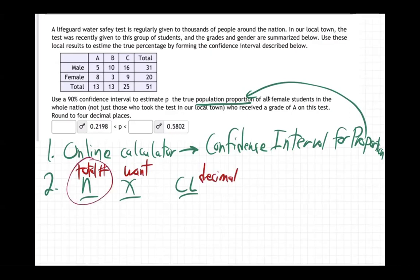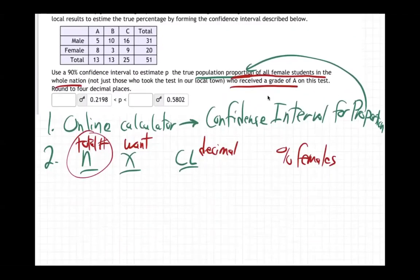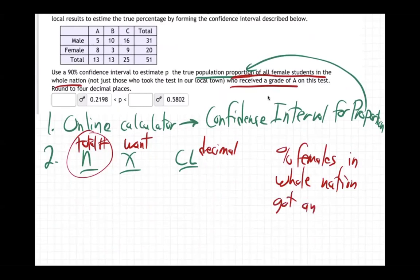So what is the total number? First off, what are we going to put in for n? Well, what are they asking us to find? The proportion of all females in the whole nation who received an A. So percentage of females in the whole nation who got an A.